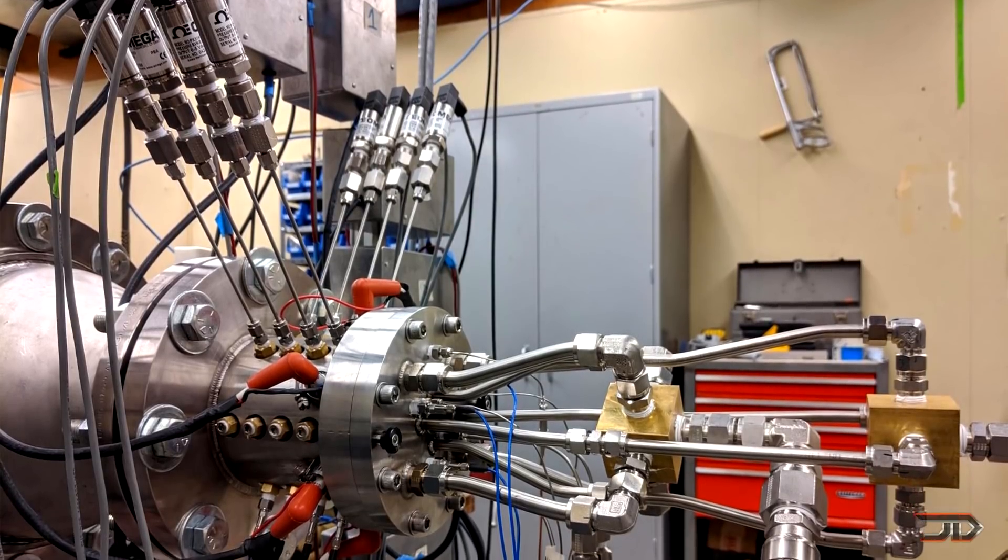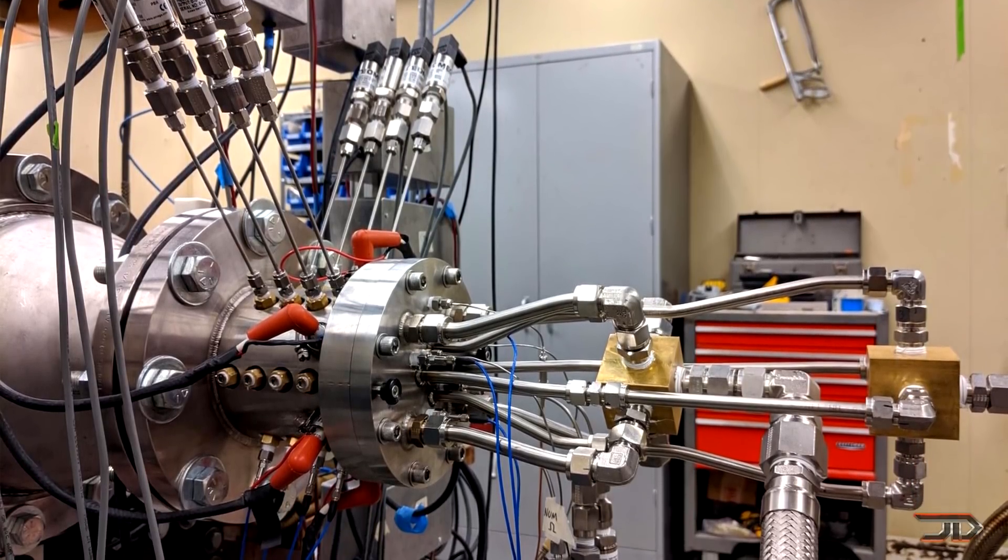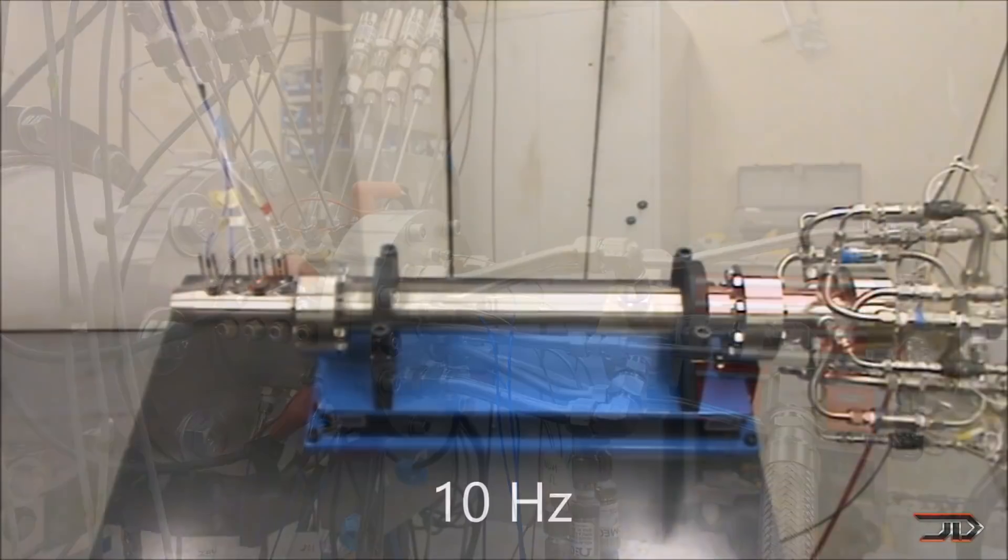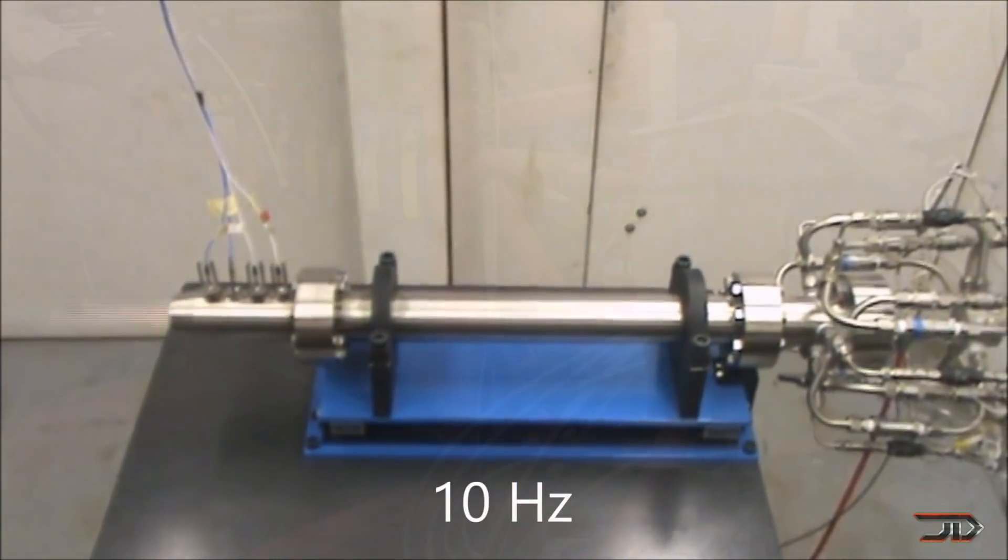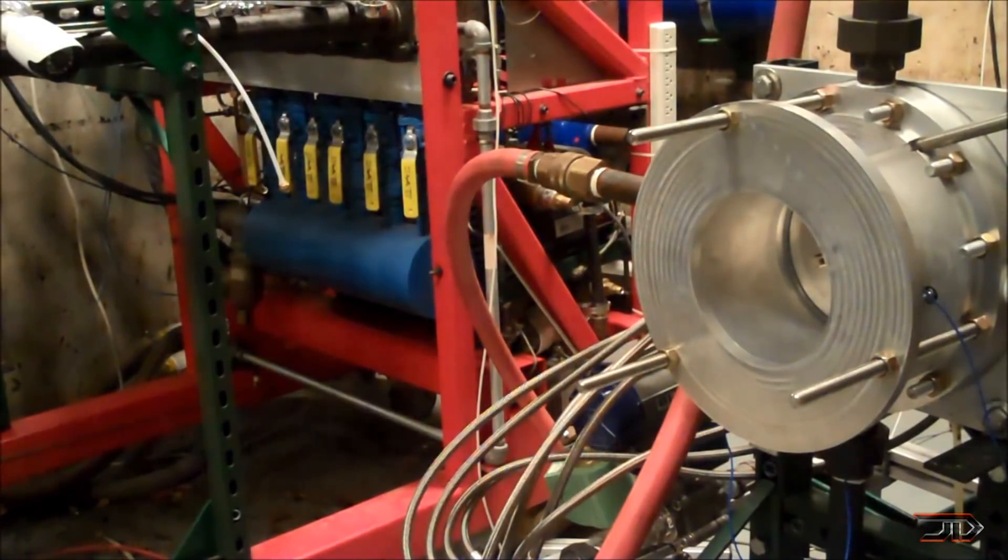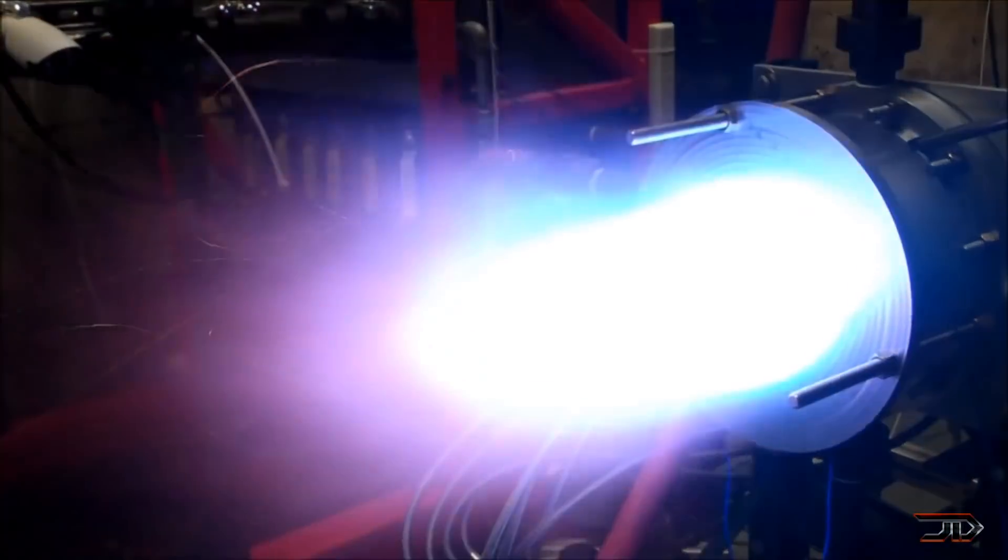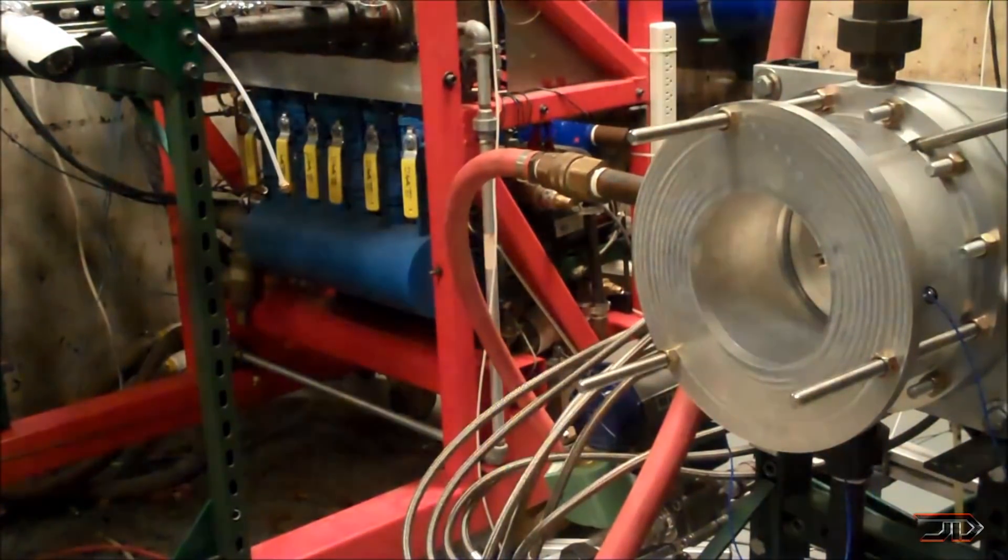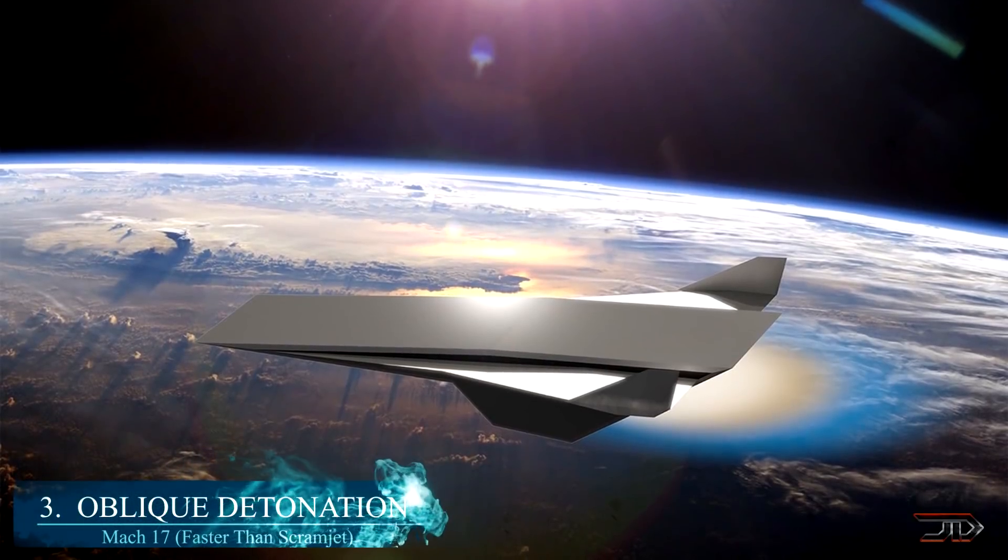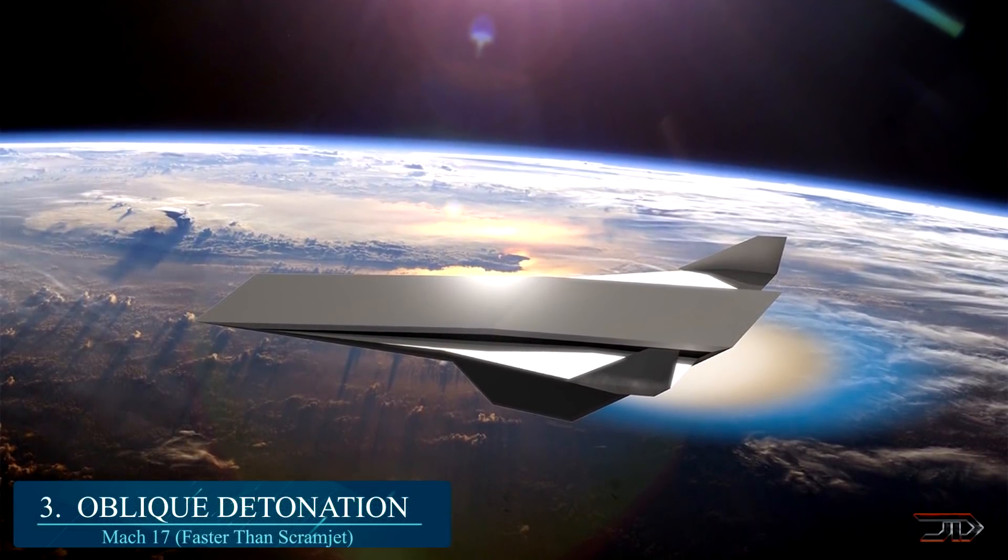At number 3, the Oblique Detonation Engine. We have seen pulse detonation, which creates a series of explosions, which is also very loud. Then there's the rotating detonation variant, which is tuned within a ring-shaped channel. Thus, the explosions are more continuous and more efficient. But there's also a third type of detonation in this series, which is even more advanced.